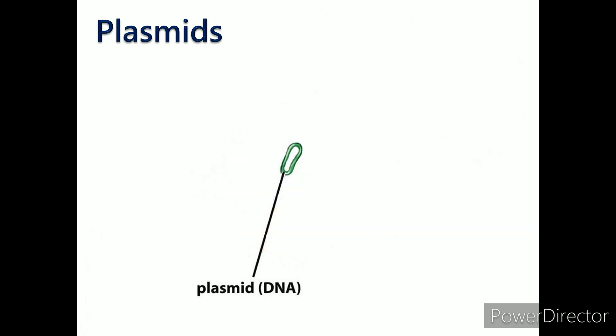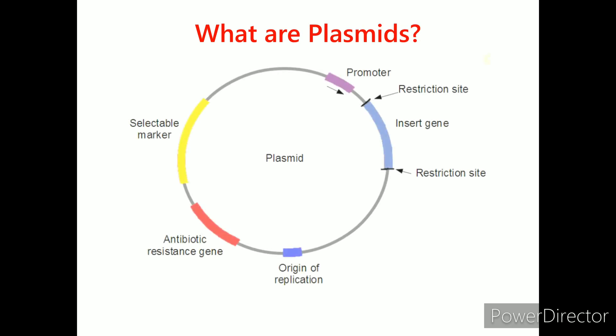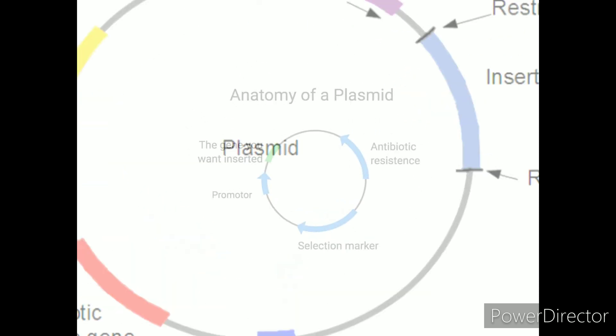Plasmids are mainly found in bacteria but they can also be found in archaea and multicellular organisms. Plasmids usually carry at least one gene and many of the genes that plasmids carry are beneficial to their host organisms. Although they have separate genes from their hosts, they are not considered to be independent life.